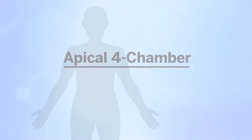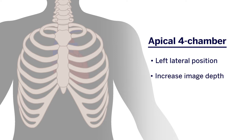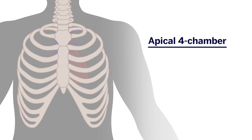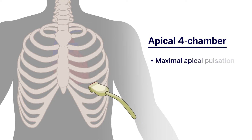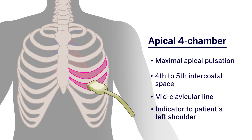Starting off with the apical four-chamber view — this view can be challenging to master, however it is a very important view for chamber and valve function quantification. To improve our imaging windows, it is imperative to optimize patient positioning by placing the patient in the left lateral position if possible. You will also need to increase the depth of the image. The ultrasound probe is placed at the point of maximal apical pulsation, which is generally the fourth or fifth intercostal space in the mid-clavicular line. The probe indicator should be facing towards the patient's left shoulder, as indicated by the blue arrow in this image.